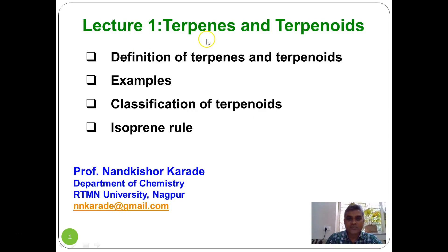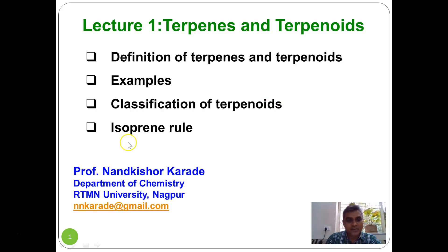In this lecture we are going to discuss the basic terminologies involved in terpenes and terpenoids. We will see definitions, examples, various structures and classification of terpenoids. We will also see how the isoprene rule is useful in understanding the complexity of structures of terpenes and terpenoids.